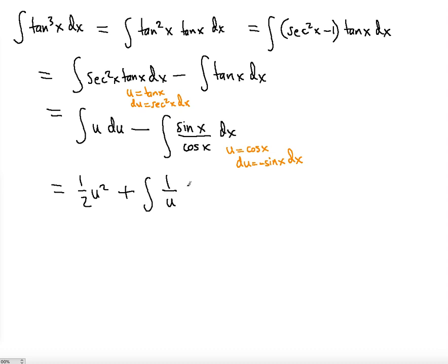We have ∫(1/u)du plus a constant. Why a constant? Because we already have one antiderivative solved for, which was (1/2)u².